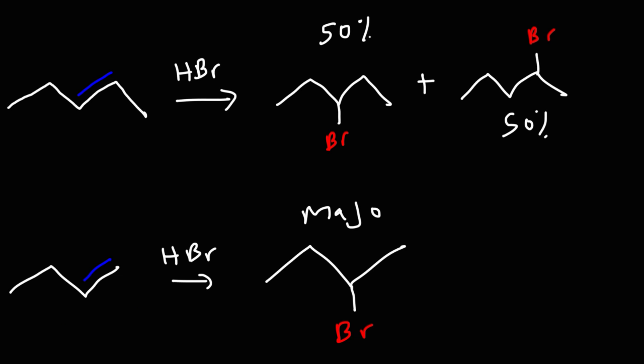So the question is, why do we get this as the major product? Well, there's something called Markovnikov's rule, which basically states that the hydrogen atom — the electrophile — adds to the carbon with the most number of hydrogen atoms. These are the sp2 carbons, the carbons that are part of the alkene. This carbon has one hydrogen, and this carbon has two hydrogens.